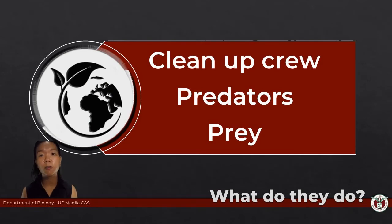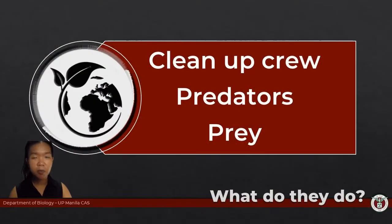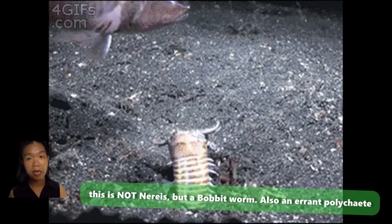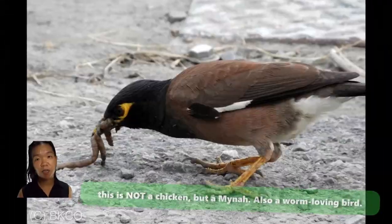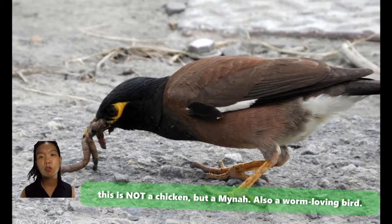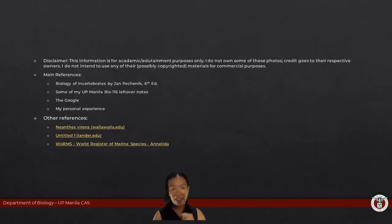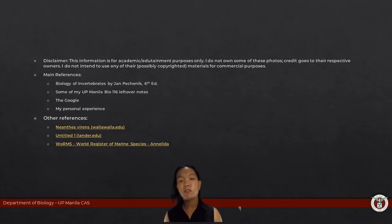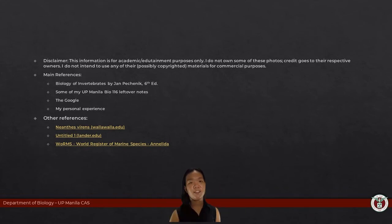Annelids form the foundations of ecosystems — they clean up dead leaves and dead animals and help reincorporate nutrients back into the environment for use by plants and other animals. In the food chain, they serve as either predators or prey: errant polychaetes like Nereis are predators, while earthworms are prey for many animals like chickens. Everything is connected. We are finally done with all the squishy phyla.